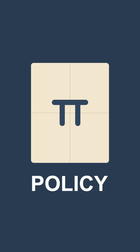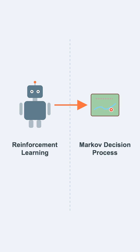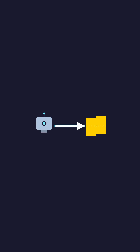The agent uses the MDP to learn a policy — a strategy that tells it what action to take in any state. So reinforcement learning is the training paradigm, and the Markov decision process is the mathematical map it uses to navigate and win.